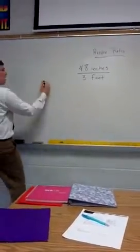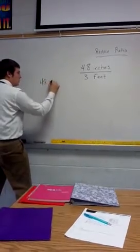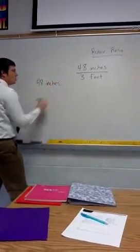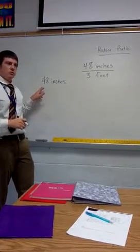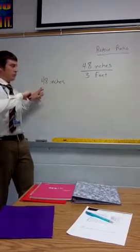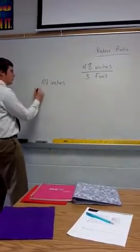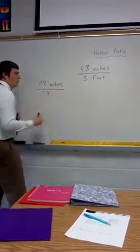So we have 48 inches. Are we going to multiply it by twelve or divide it by twelve? And how do we know? Juniper? We divide it by twelve because feet are bigger than inches. Very good.